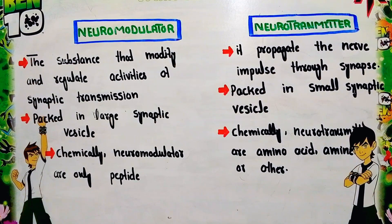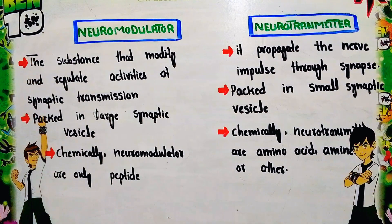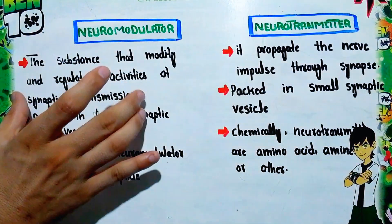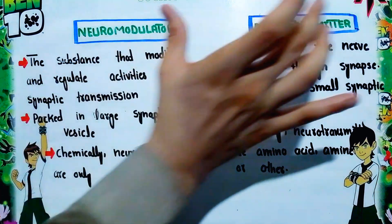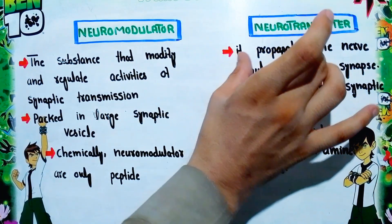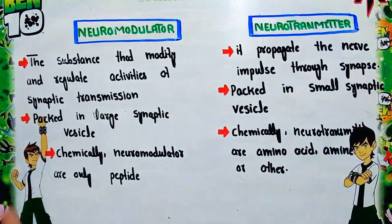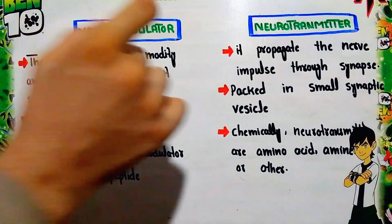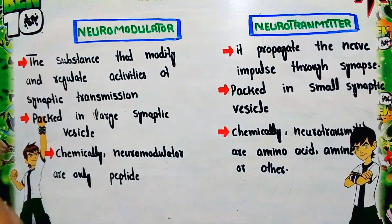Neuromodulators regulate synaptic transmission in three ways: first, they modify the strength of synaptic transmission; second, they influence the release and re-uptake of neurotransmitters; third, they alter the excitability of the neuron. By these three means, neuromodulators regulate and modify the activity of synaptic transmission, while neurotransmitters actually propagate the nerve impulse through the synapse.